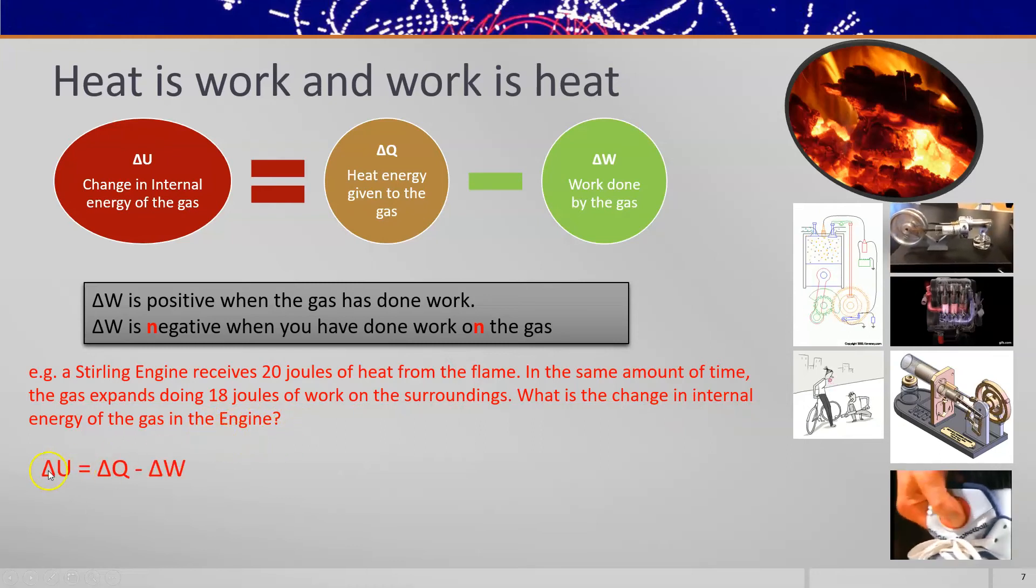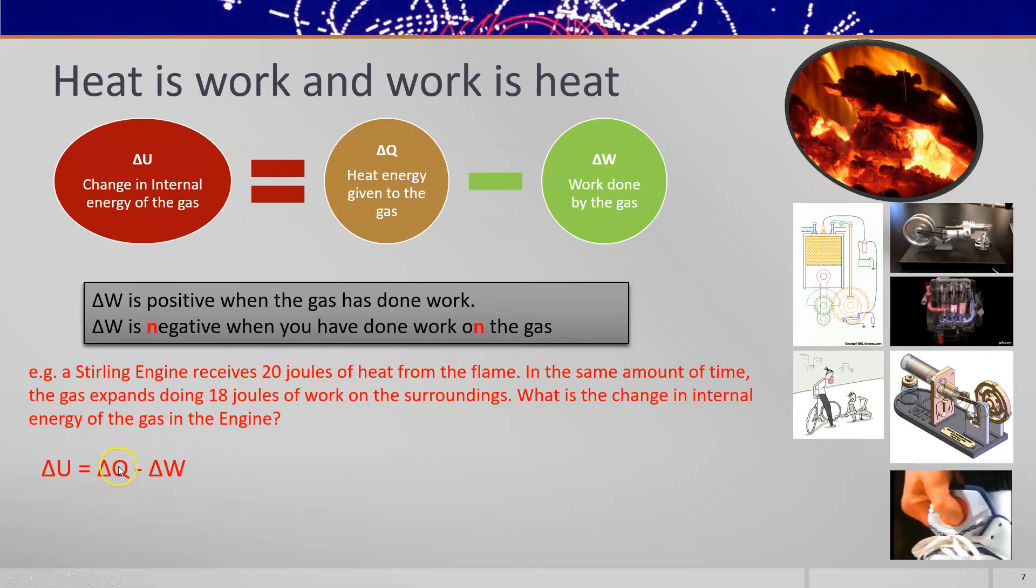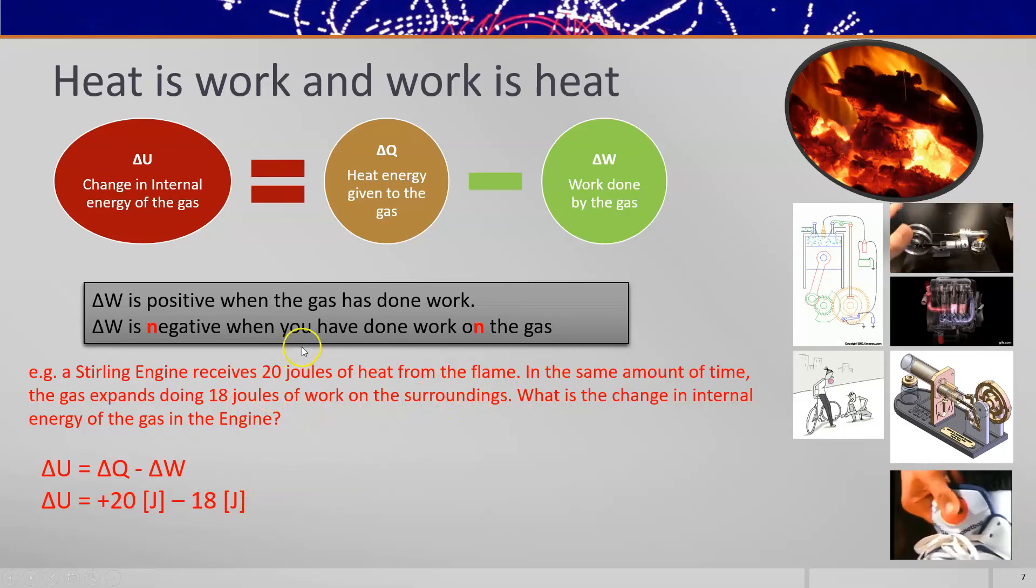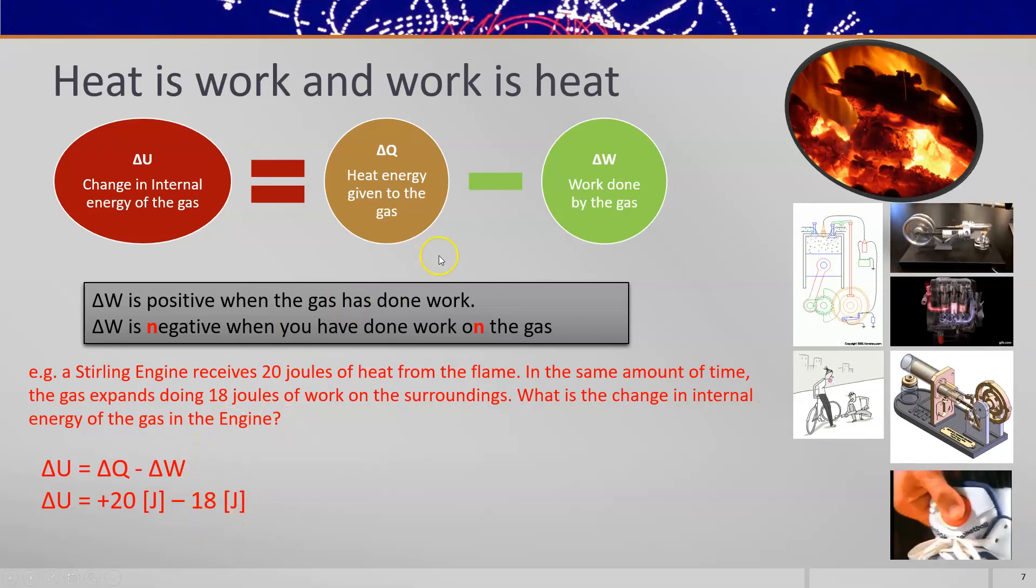So let's use delta U equals delta Q minus delta W. Delta Q, you can see it receives 20 joules, so delta Q is positive, it's heating. And the gas does work on the surroundings, so the gas is doing the work, therefore delta W is a positive number. You subtract it from delta Q, and that means the internal energy will go up by two joules.